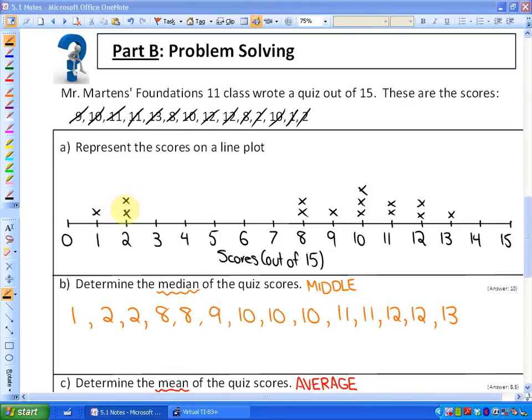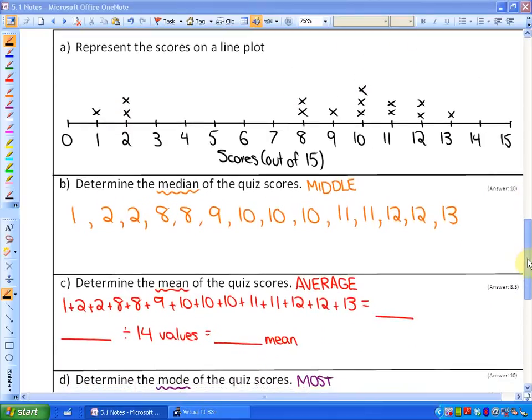Okay, so there's my class. So I had one student get a one, two students get twos, and no students got between three and seven, and a whole bunch of students between eight and thirteen.